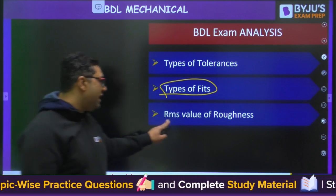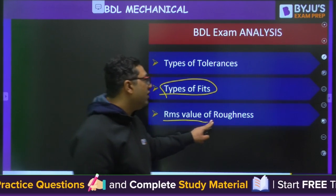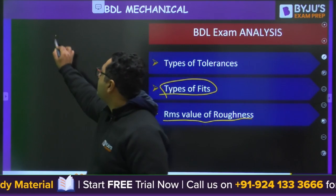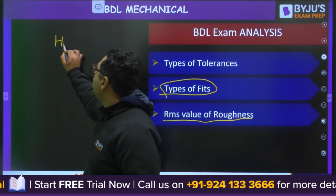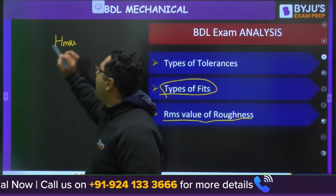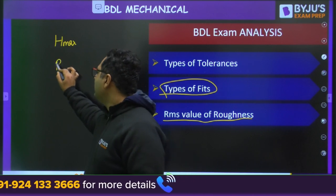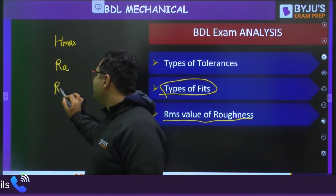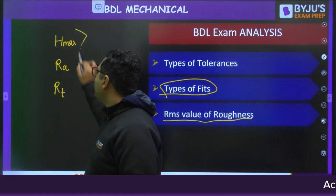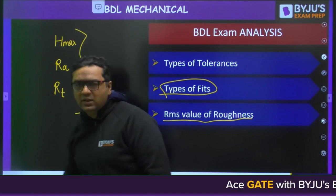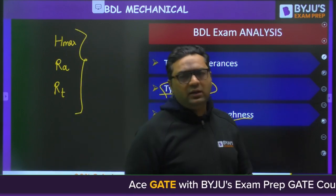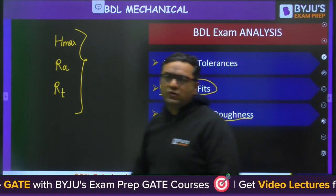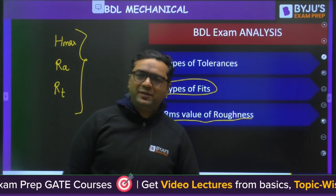One question was from RMS value of roughness. When discussing surface roughness, we have H_max (maximum peak to valley height), average roughness, RMS value, and the 10-point method. This is an important topic from metrology and inspection.